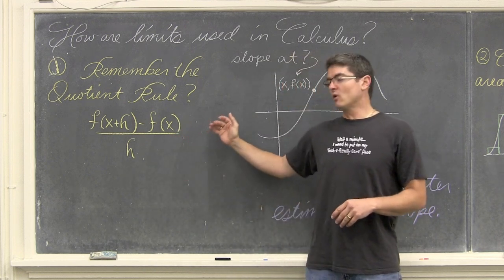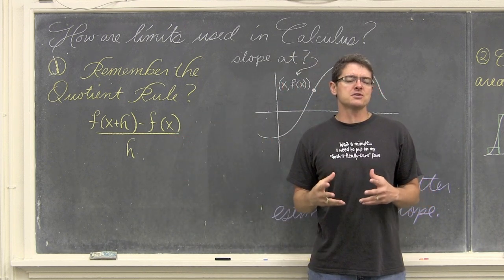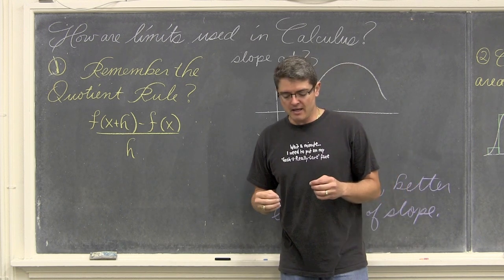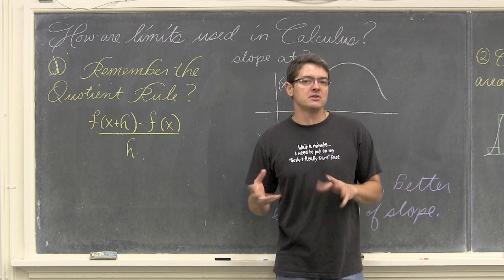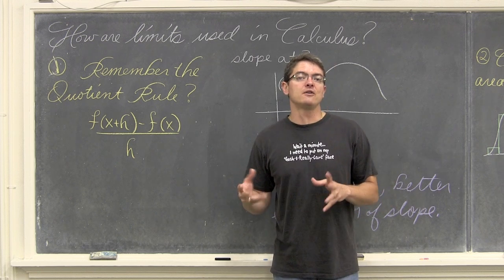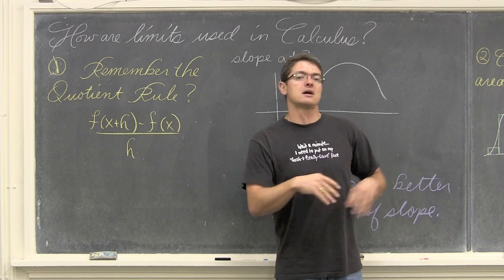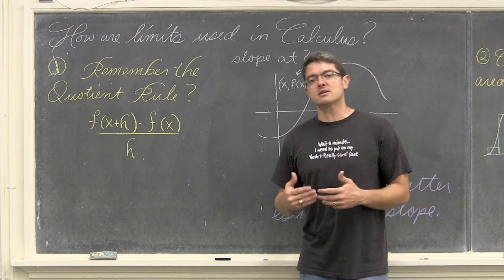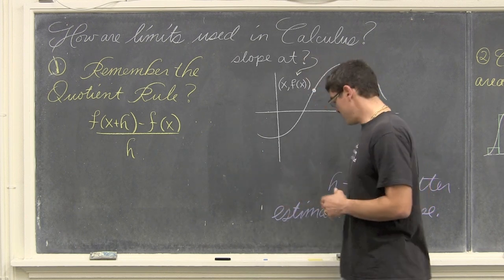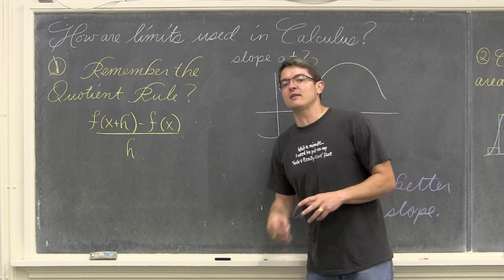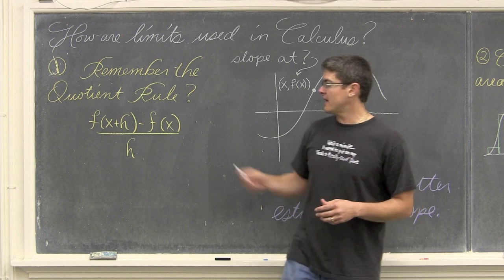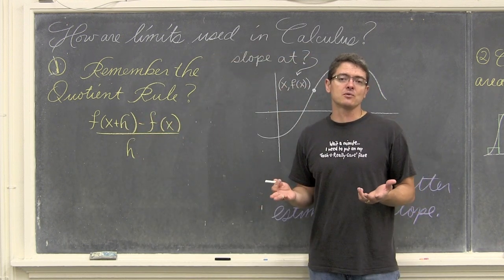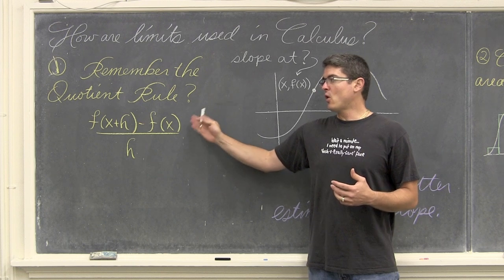We reviewed or were introduced to this formula when we were first learning or being reminded of function notation — like, if it was f of 2 you take out the x and plug in 2, or if it was f of a plus 2 you took all the x's out and plugged in a plus 2. They threw this formula in to help you practice relearning how that function notation worked. I did a video on this, and basically because I knew it was going to come up in chapter 11 with this quotient rule.